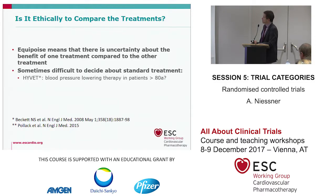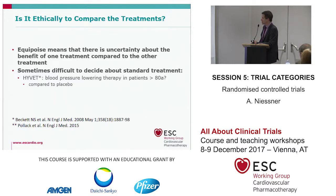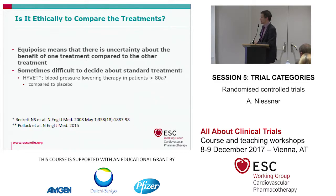For example, in the HYVET study, published in 2008, there was the question: is there evidence for blood pressure lowering therapy in patients over 80 years? They decided there was no evidence to lower blood pressure in patients above 80 years of age. So the comparison group got placebo and nothing else, and the study was highly successful.